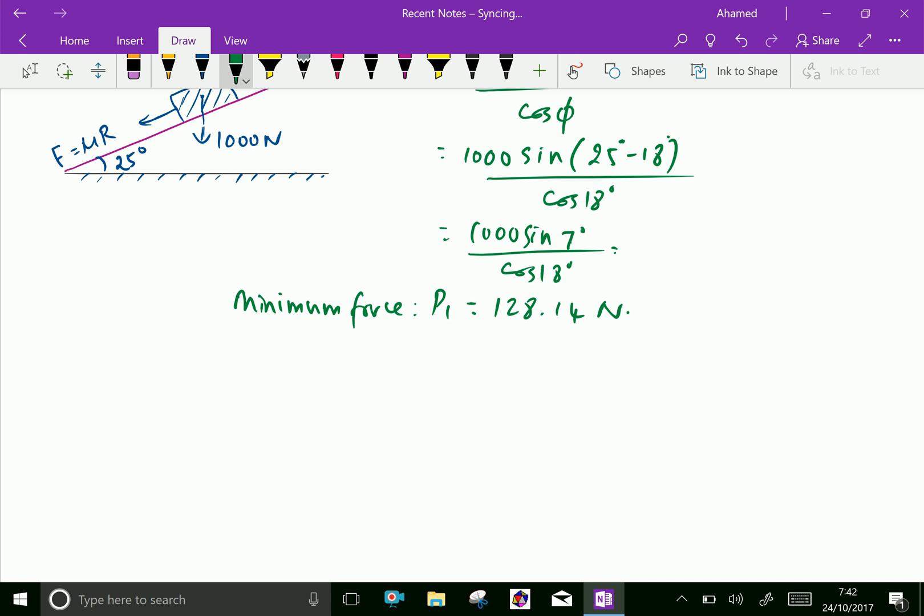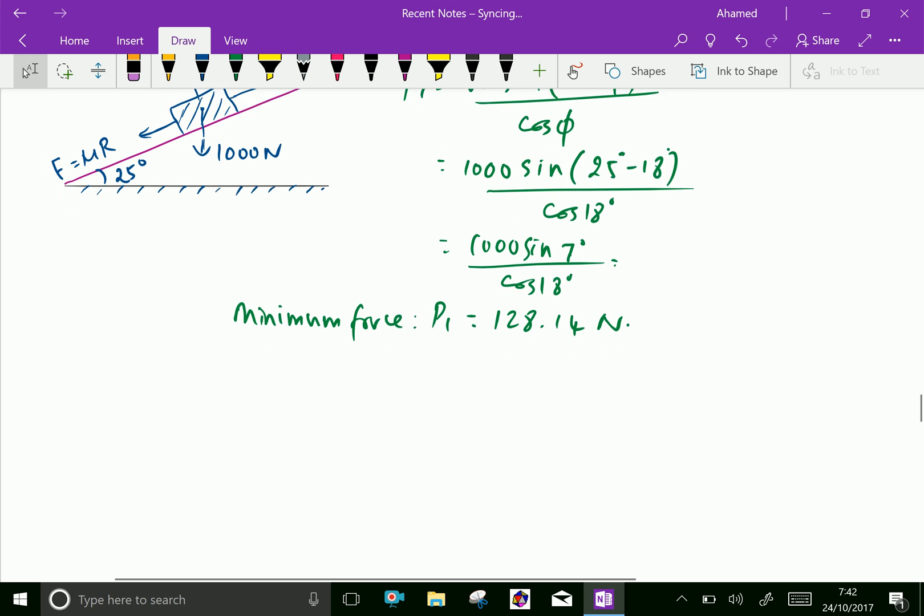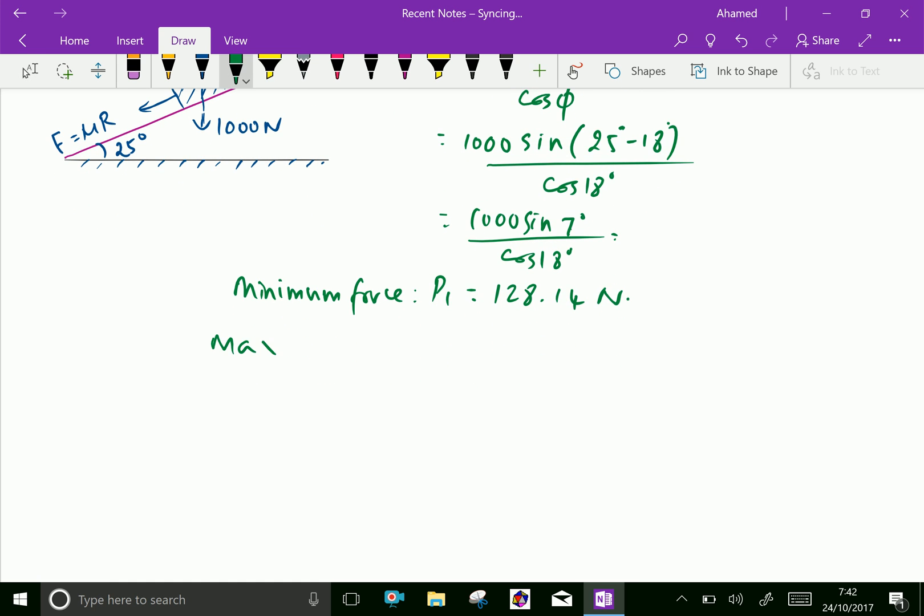Now, let us calculate maximum force. When the body is pulled upward, the friction acts in the opposite direction of P. Maximum force P2 equals W sine (alpha plus phi) over cos phi, which equals 1000 sine (25 plus 18 degrees) over cos 18 degrees.